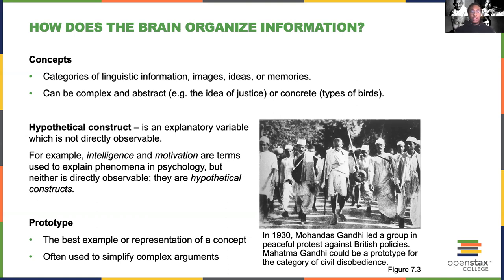Another thing to discuss is prototypes. A prototype is the best example or representation of a concept. For example, a lot of people talk about Gandhi as a prototype for civil disobedience or for someone who engaged in peaceful protest. Prototypes are useful when it comes to problem solving — they give us examples and guidelines to go by. But prototypes can also be problematic when we use them to simplify complex arguments.